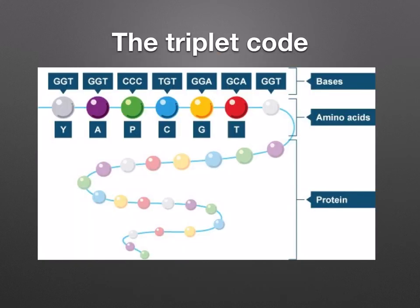Proteins show almost infinite variety. This variety depends on the sequence of amino acids in each protein. There are just 20 amino acids that regularly occur in proteins, and each must have its own code of nucleotide bases on the DNA. Here you can see different amino acids represented by the circles, and their corresponding DNA bases.